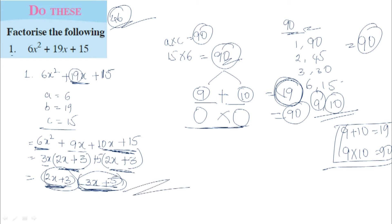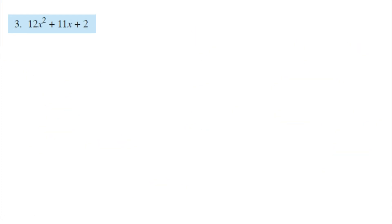Next, in do this there are total 3 problems. The 1st and 3rd I'll explain. The 2nd one you have to do yourself. Third question: 12x² + 11x + 2. A equals 12, B equals 11, C equals 2.